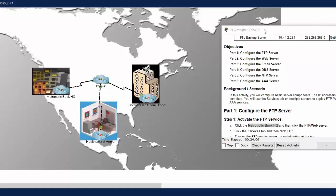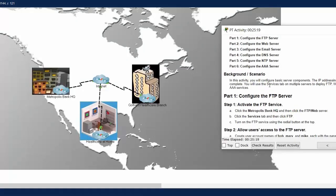In this Packet Tracer activity, we will configure basic server components. The objectives are to configure the FTP server, web server, email server, DNS server, NTP server, and AAA server. The IP addressing configuration is already complete. We will use the Services tab on multiple servers to deploy FTP, web, email, DNS, NTP, and AAA services.